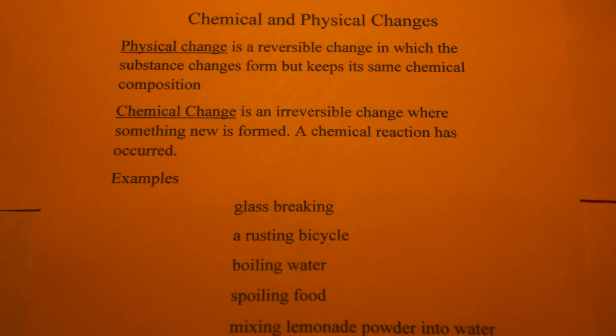This video is going to discuss the difference between chemical and physical changes. A physical change is a reversible change in which the substance changes form but keeps its same chemical composition.